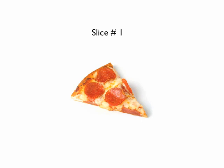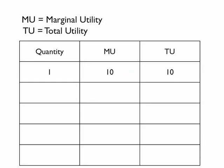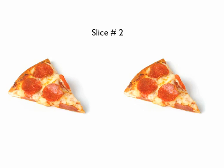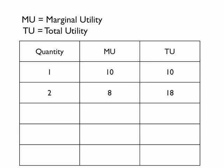After consuming the first slice, your marginal utility is 10 and your total utility is 10. After consuming the second slice, your marginal utility is 8 and your total utility is 18.